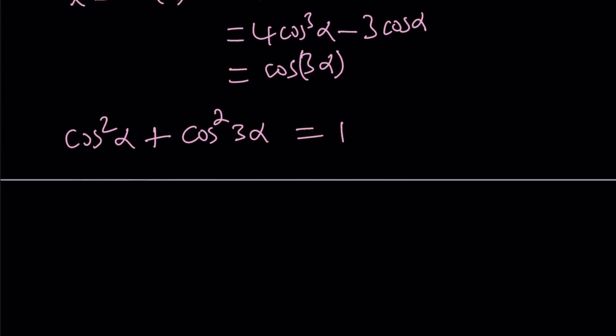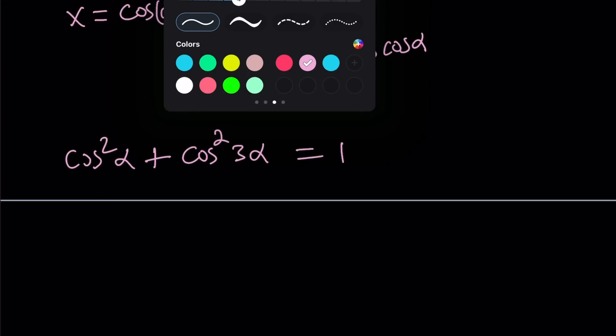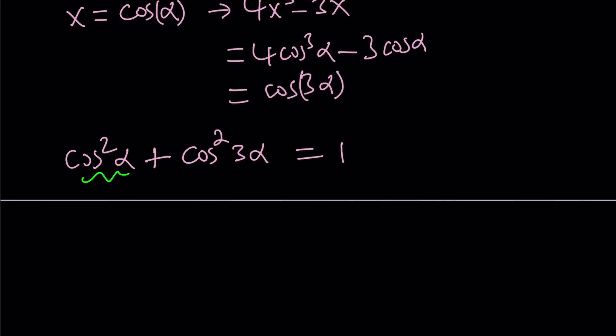But we can still do the same, or we could still use the same identity. If you go ahead and subtract cosine squared, or you could replace cosine squared with 1 minus sine squared alpha. And then 1 is going to cancel out.